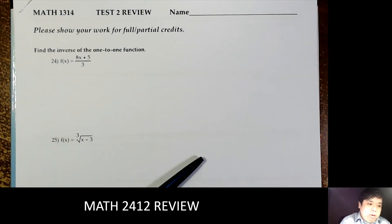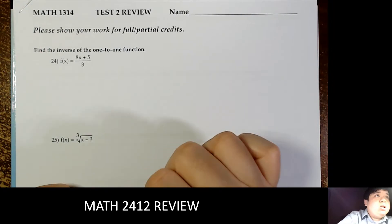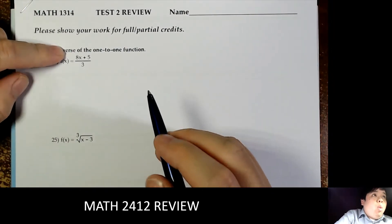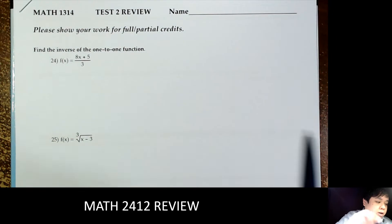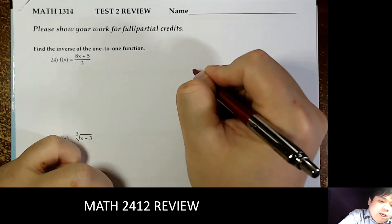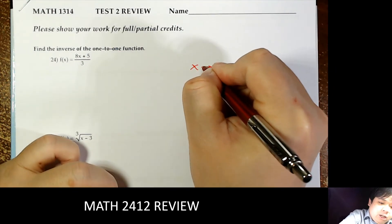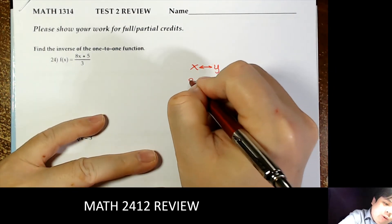We continue reviewing algebra. Finding the inverse of a one-to-one function. Only one-to-one functions have inverses. To find the inverse, there are a few steps. The most important thing is to interchange x and y, and after that we solve for y.